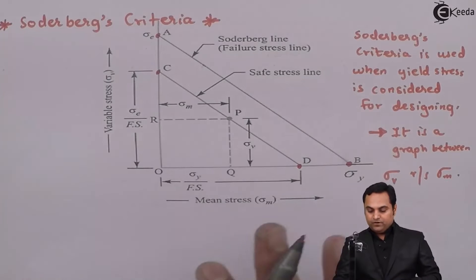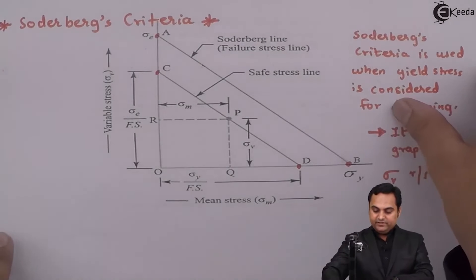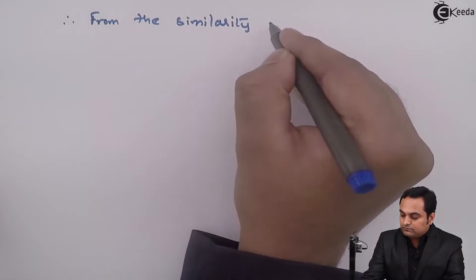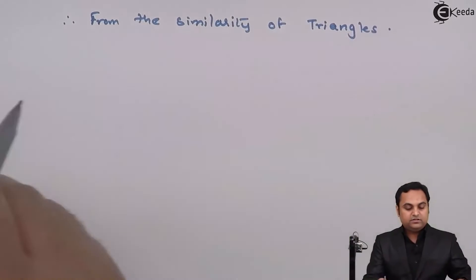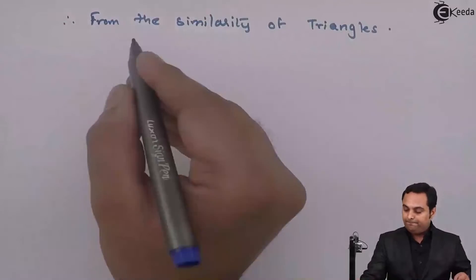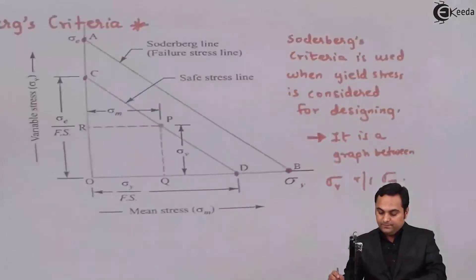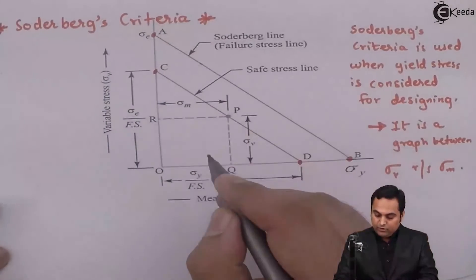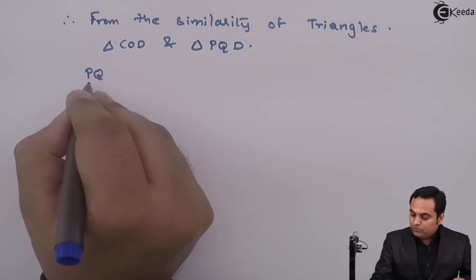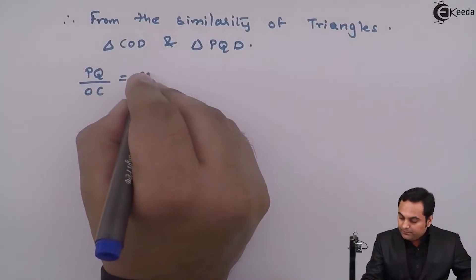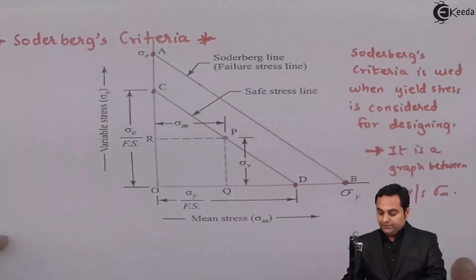We can also derive this using the similarity of triangles. We consider two triangles: the bigger triangle COD and the smaller triangle PQD. From similarity of triangles, PQ upon OC equals QD upon OD.